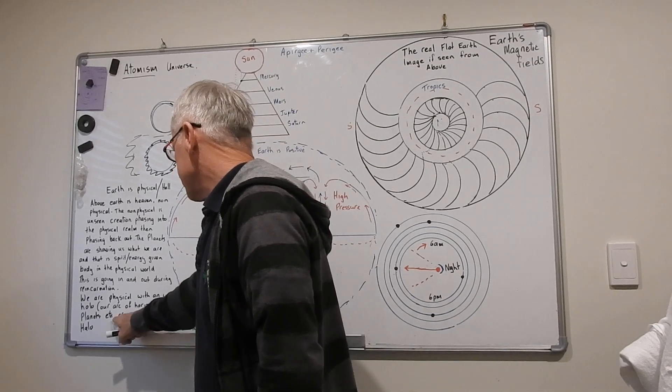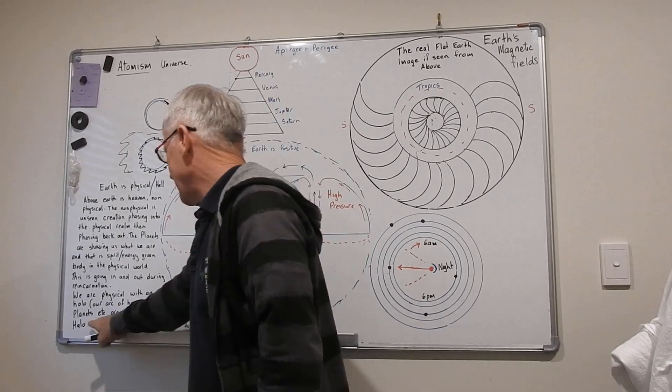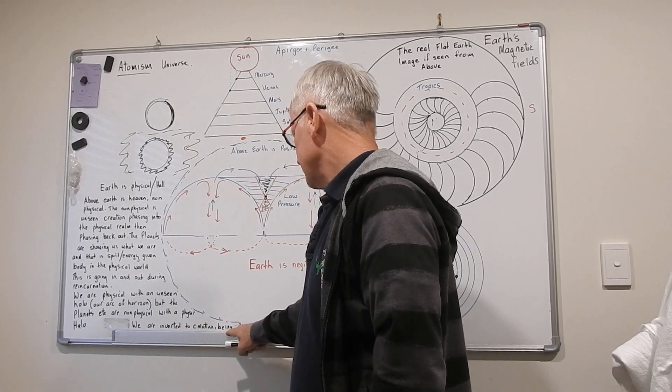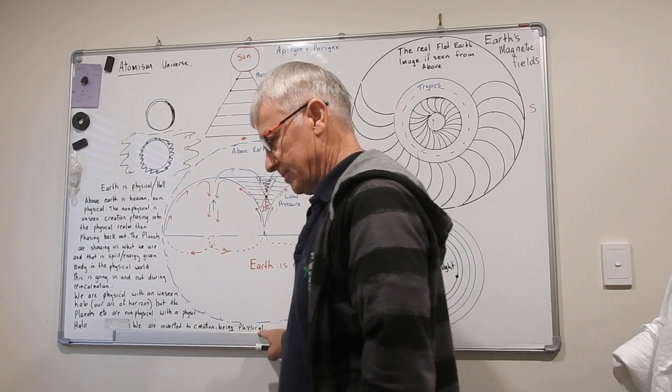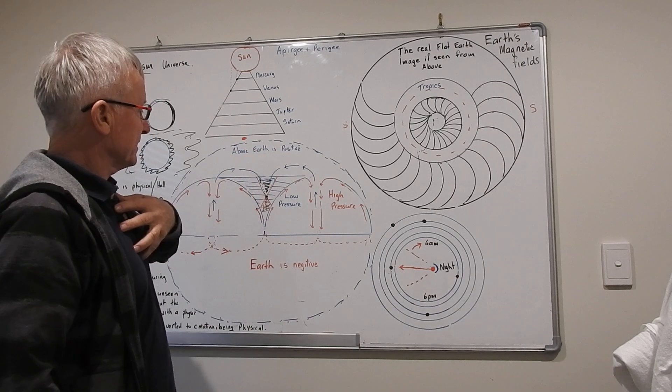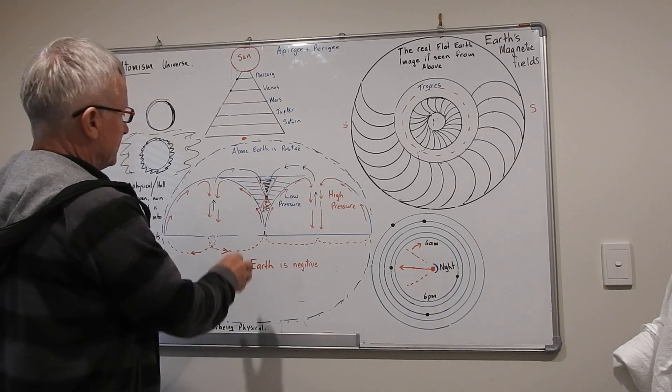But the planets are non-physical with a physical halo. We are inverted to creation, being physical. Whatever goes on up there is opposite to us, and all the magic is happening in here.